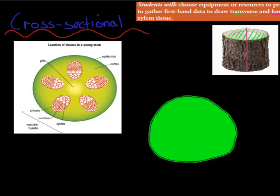So I'll go over the first part, the cross-sectional. So what I have here is actually a picture, so you might have done this in class. You might have looked at the cross-sectional view of xylem. So it says here, location of tissue in a young stem.